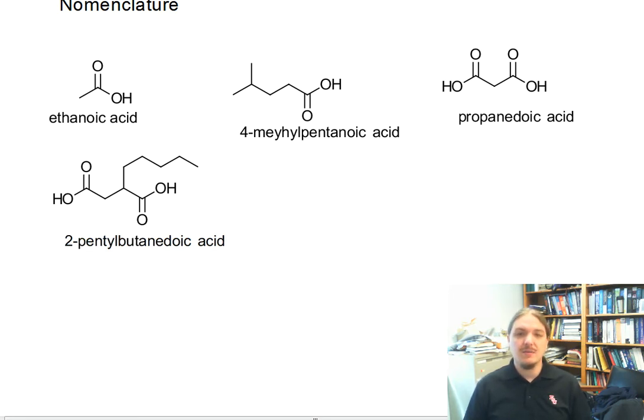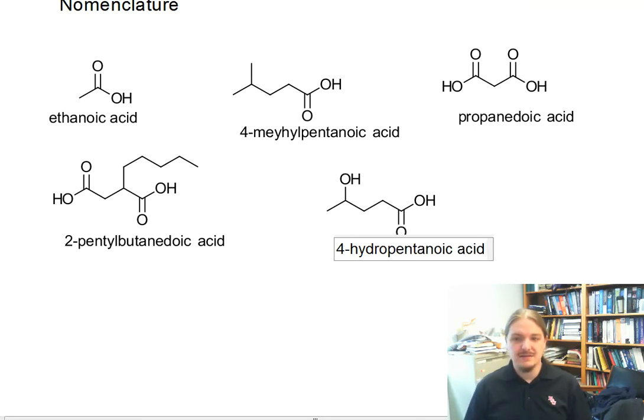And the carboxylic acid functional group tends to have higher priority than most other functional groups. So a molecule that has, for example, an alcohol and a carboxylic acid in it, this is 4-hydroxypentanoic acid. And you can name other substituents similarly.